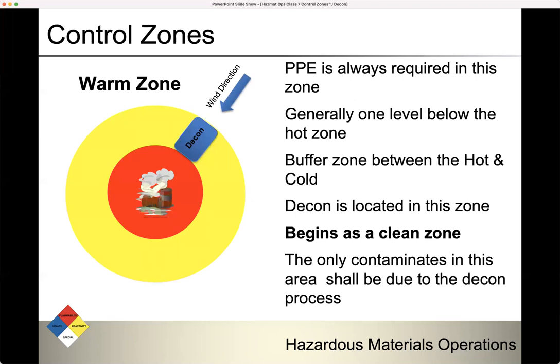In the warm zone, PPE is also always required. Personnel working in the decontamination group generally wear one level of PPE below the hot zone. Keep in mind, this is a buffer between the hot and the cold — this is where we do decon. It begins as a clean area; the only contaminants in this area should be due to the decon process itself, as we bring contamination out of the hot zone through decon.